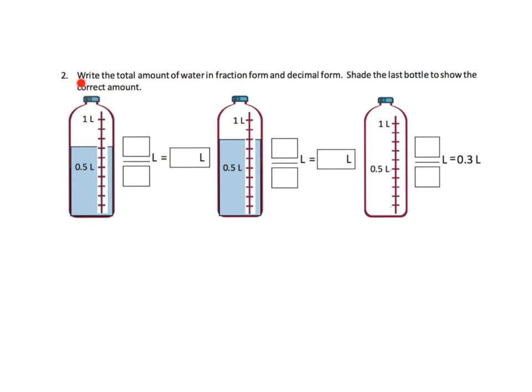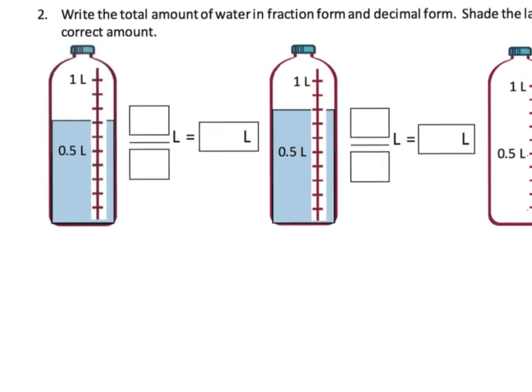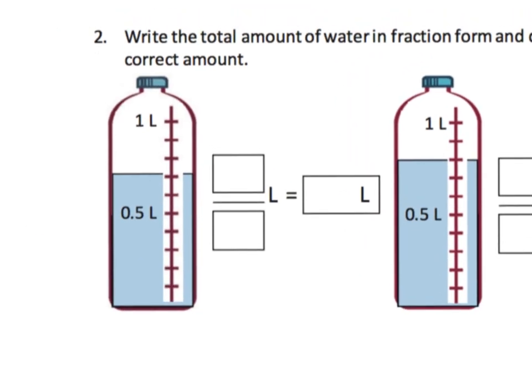Here it says write the total amount of water as a fraction and then as a decimal. I'm going to zoom into this first bottle. We are going to write it as a fraction. The first thing we notice is that's one, two, three, four, five, six, seven, eight, nine, ten. We have ten portions altogether, so our denominator is 10.